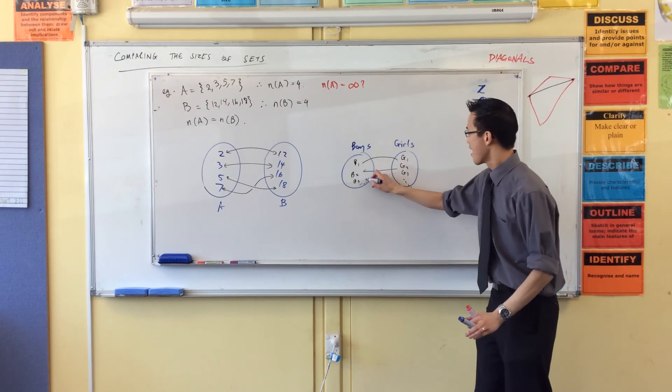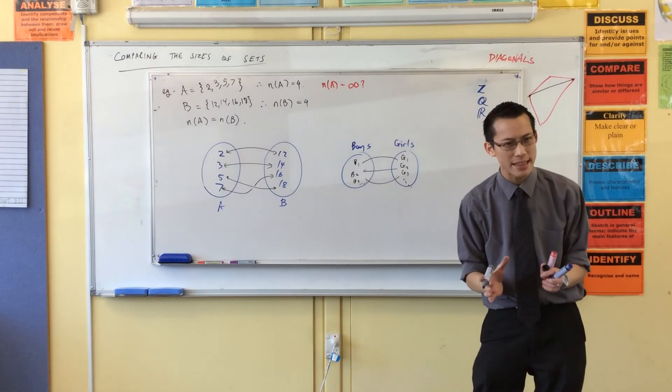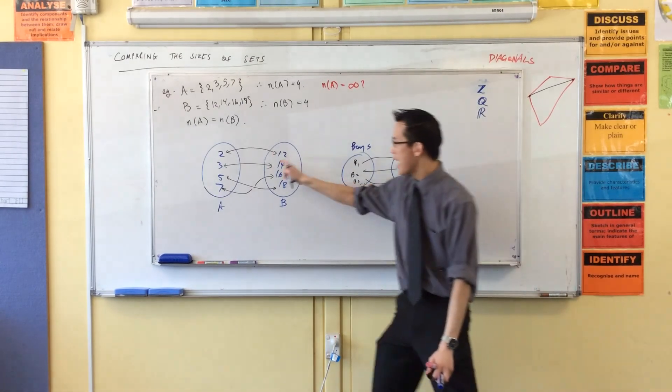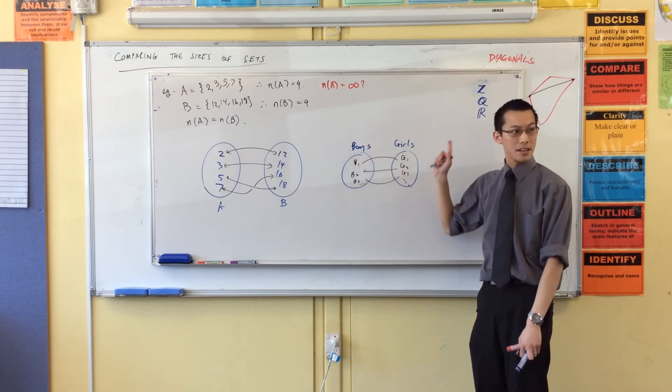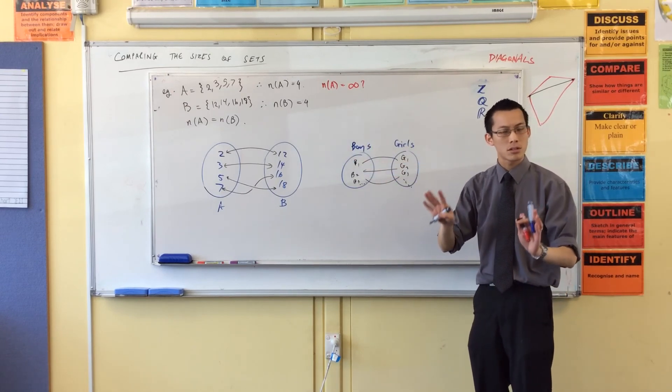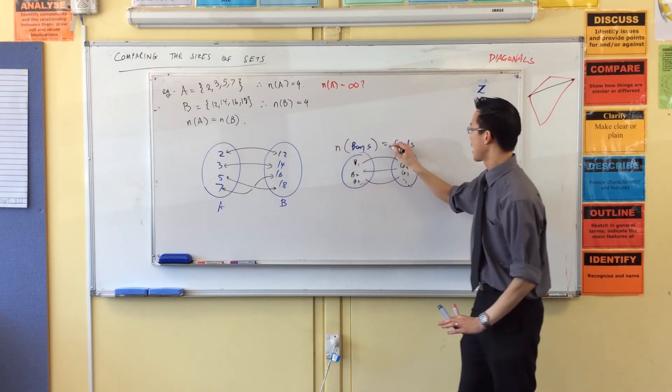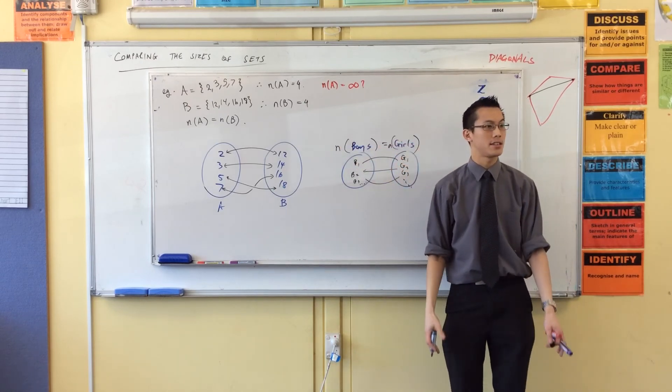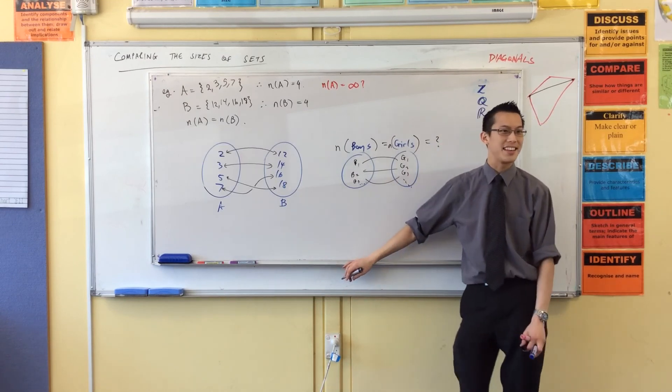So then you can say, the set of boys and the set of girls, same size. Does that make sense? If I can match them up like this, then I can say the sizes are equal, even if I don't know what the sizes are.